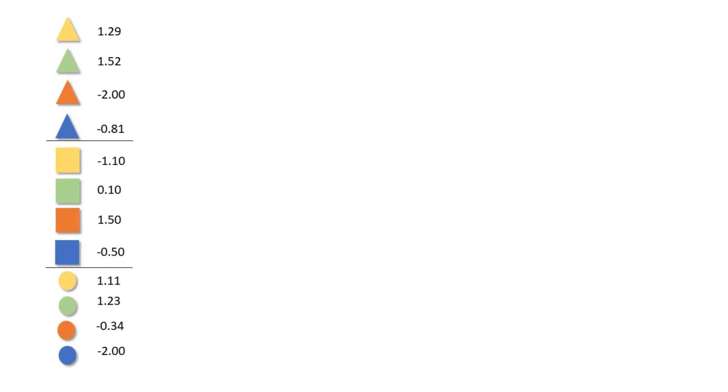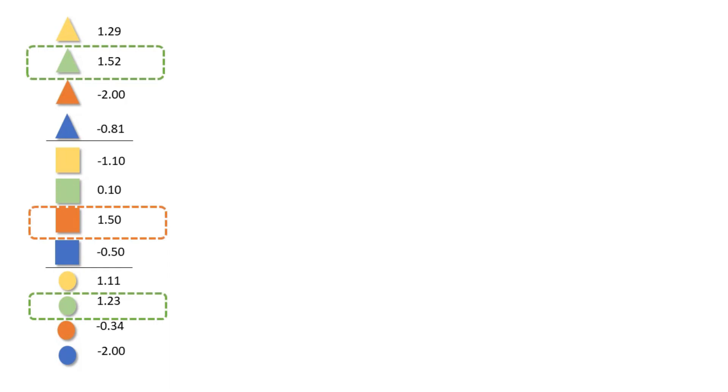The part worth utility scores can also be used to calculate an optimal product. We can construct a product simply by selecting the colors from each shape that maximize the probability of selecting that product in the market — in other words, the optimal product. For example, if one of the shapes were price, the part worth utilities could simply be used to understand the product's price elasticity or its demand curve.